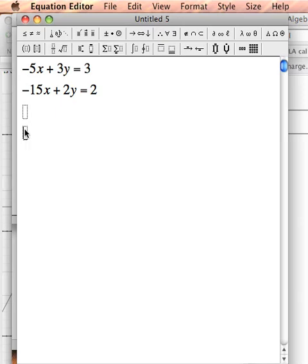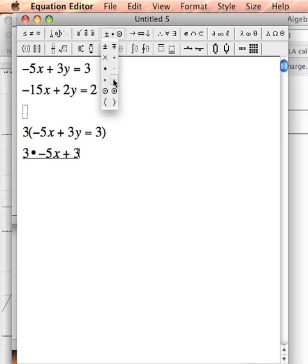So let's type out my first equation. So let's write negative 5x plus 3y equals 3. Let's see if that works. So here I'll have 3 times negative 5x plus 3 times 3y equals 3 times 3.